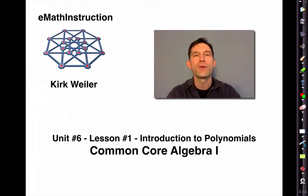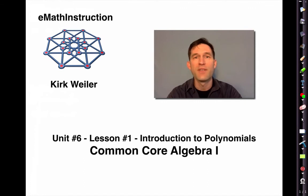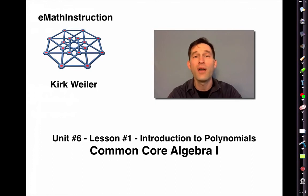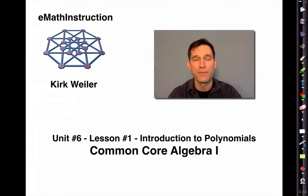That was our first lesson on polynomials. Polynomials act a lot like integers — they have decreasing powers on x and they have coefficients. They add like integers do, and when you add a polynomial to a polynomial you get another polynomial. In future lessons we'll learn how to multiply polynomials, and we'll even learn how to un-multiply polynomials — what's known as factoring. Division we'll leave to Algebra 2. That's been Unit 7 Lesson Number 1 from eMath Instruction. I'm Kirk Weiler, and until next time, keep thinking and keep solving problems.